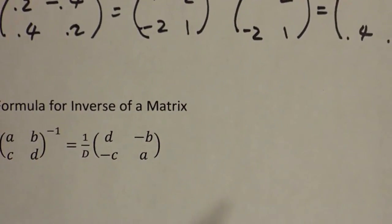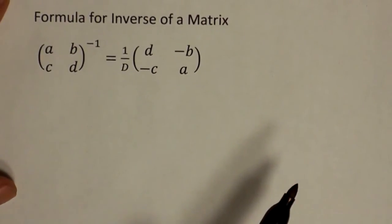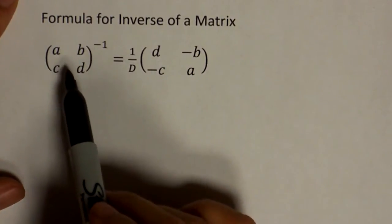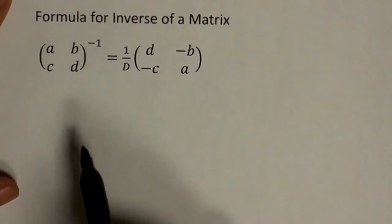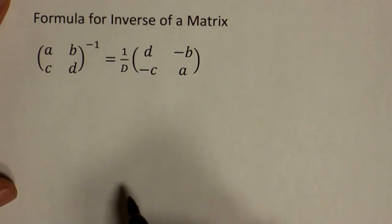This is a two by two matrix. And there are formulas for inverse of three by three, four by four, five by five, and so on. It has to be a square matrix to have an inverse.